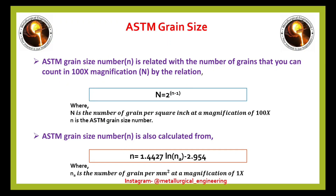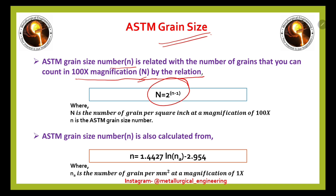Hello everyone, this is Part 4 of important formulas and concepts for GATE 2023. We will see the ASTM grain size number — that is small n — which is related to the number of grains you can count at 100x magnification, that is capital N, by the relation: capital N is equal to 2 to the power (small n minus 1), where capital N refers to grains per inch square.